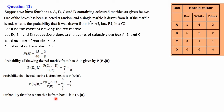Next is the probability that the red marble is from box C, P(Ec|R). Using the formula P(Ec∩R) / P(R): box C has 8 red balls, so P(Ec∩R) = 8/40. Dividing by P(R) = 3/8 gives 8/40 × 8/3, and cancelling gives 8/15 as the answer. So these are the three answers for box A (1/15), box B (2/5), and box C (8/15).